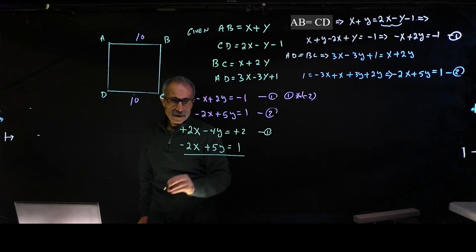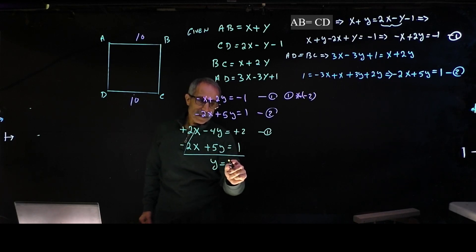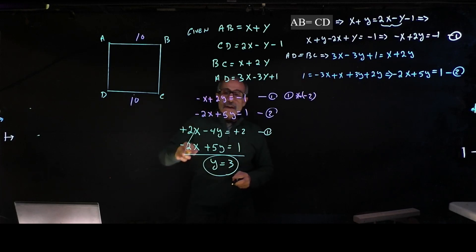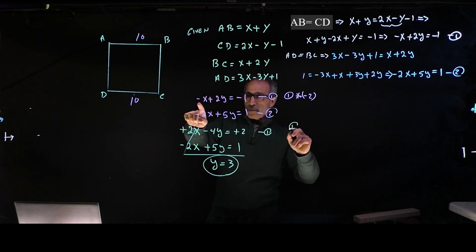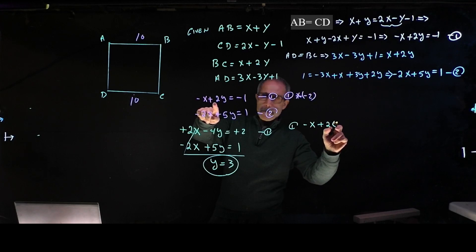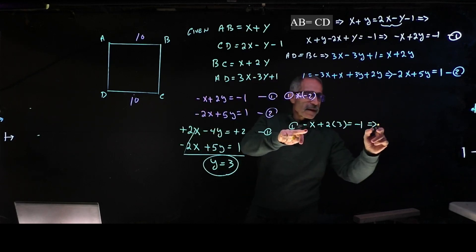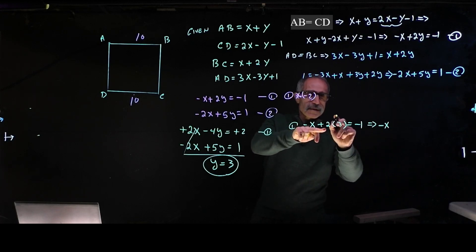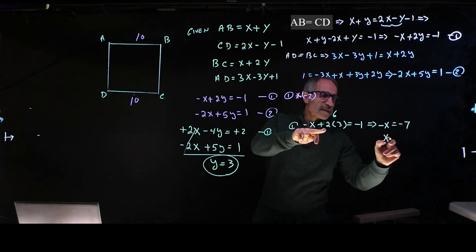Adding the two equations: the 2x terms cancel out. Negative 4y plus 5y gives 1y, and 2 plus 1 gives 3. So y equals 3. Substituting back into equation 1: negative x plus 2 times 3 equals negative 1, so negative x plus 6 equals negative 1, meaning negative x equals negative 7, therefore x equals 7.